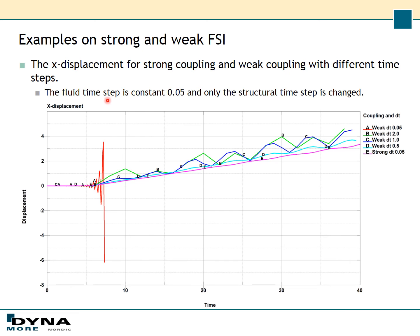I kept the fluid time step constant at 0.05 and changed the structural time step for the weak coupling. When using a big time step you can see a really big difference in the x-displacement. If you decrease the time step we get closer to the strong case, but if you use the same time step as in the strong case for the weak coupling, you get really large oscillations that will make the simulation crash.